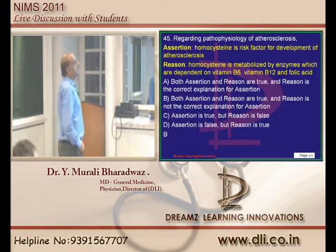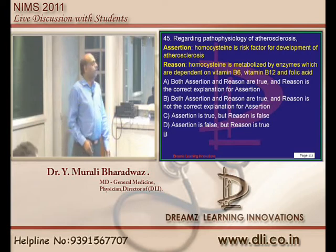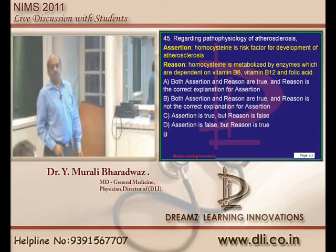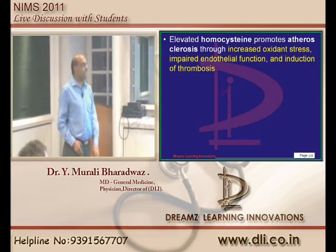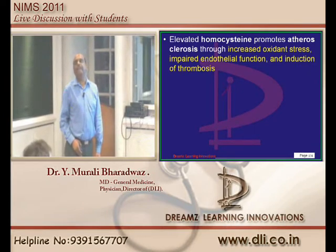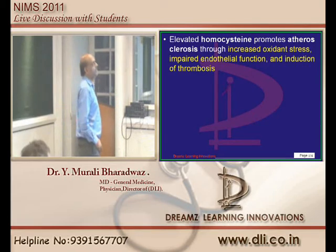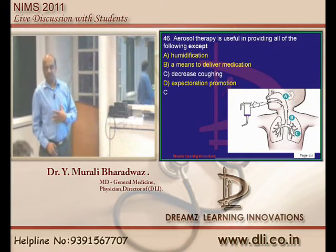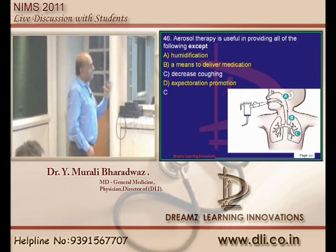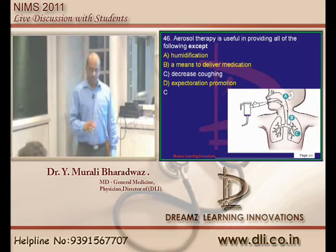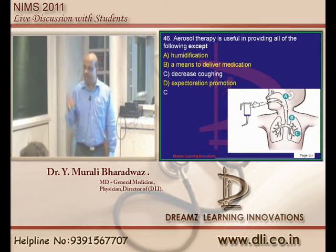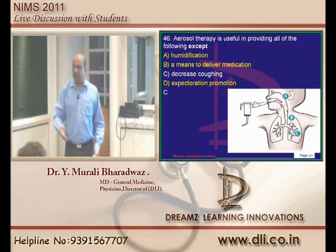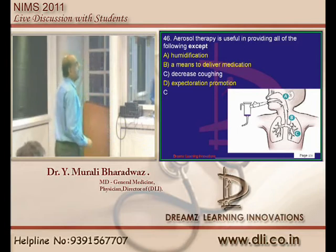Why does homocysteine increase the risk of developing atherosclerosis? The assertion is true and the reason is true - elevated homocysteine causes oxidant stress, impaired endothelial function, and increased risk of thrombosis. Aerosol therapy is used to humidify the airway and to deliver medicines such as ipratropium and budesonide in asthma via nebulizer. It also promotes expectoration. These are all the roles played by aerosol therapy.